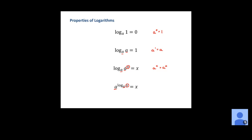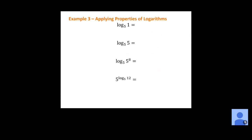Those four properties of logarithms will help us simplify and solve problems. For example three: the base 5 log of 1 — no matter what the base is, if we have 1 inside, the exponent is 0, so this equals 0, because 5 to the 0 power equals 1. The base 5 log of 5 equals 1, because 5 to the first power equals 5. The base 5 log of 5 to the 8th equals 8, since 5 to the 8th equals 5 to the 8th. And the last one equals 12.